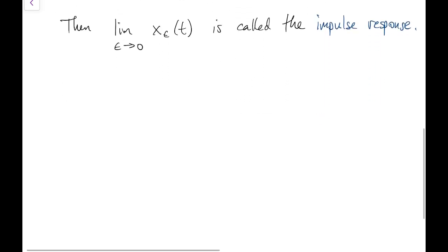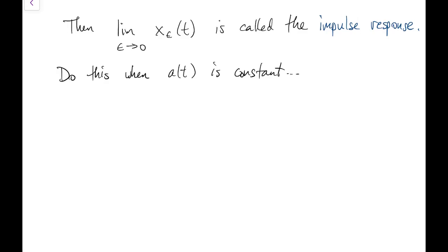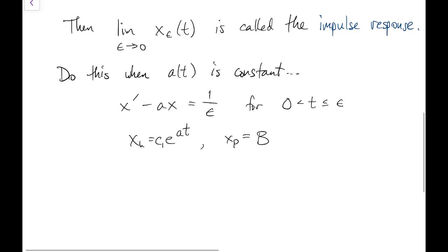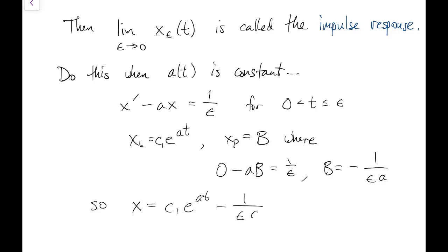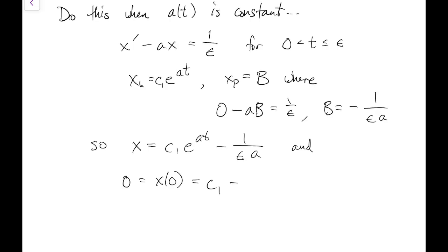We can work out all the details when the coefficient a is constant. From time 0 to epsilon, the forcing is at constant 1 over epsilon. So we need a homogeneous solution and a particular solution that has to be constant. We can easily figure out what that constant is, giving us the general solution. Then we apply the initial condition and find the constant C1.